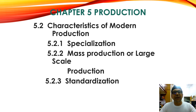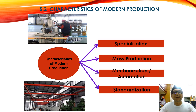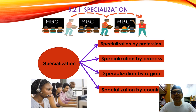Chapter 5, Production. Characteristics of modern production: specialization, mass production and so on. So we have specialization, mass production, mechanization or standardization. Specialization — what is specialization? Specialization by profession. Specialization by process. Specialization by region. Specialization by country.